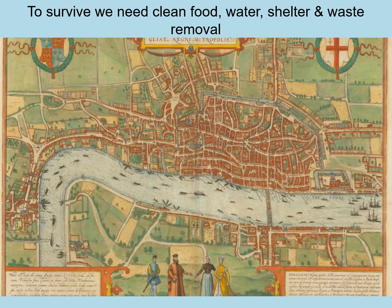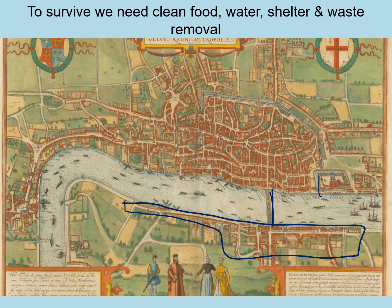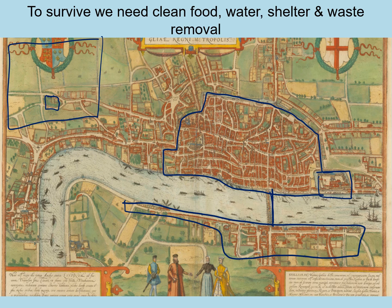This map is from just after the medieval period and shows London. We can see the South Bank, which is not very built up, and here is the only bridge originally in London — London Bridge. Here is the Tower of London and the walls of London, which show the outline of the city itself — that is the City of London. Here is a little church called St Martin's in the Fields, named because it was surrounded by fields.